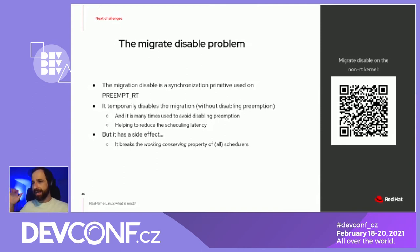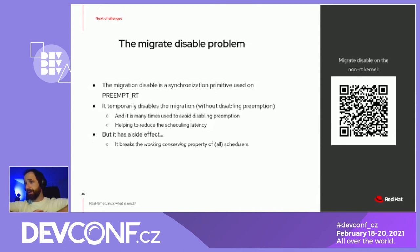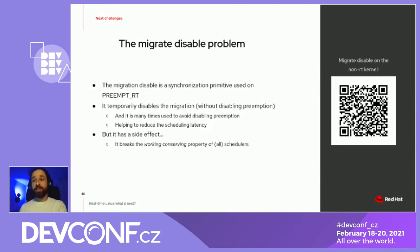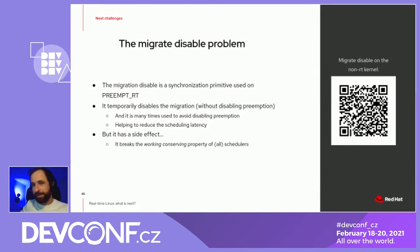That means the M highest-priority threads will be able to run on the M processors of a system. This created a discussion on the LKML because some people were trying to use migrate-disable on the non-PREEMPT_RT kernel because it would facilitate their lives, while on the other hand it would create problems for us in the scheduling subsystem.